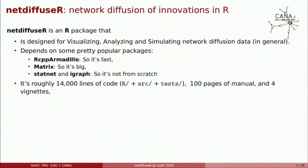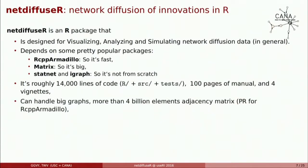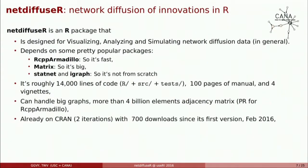It has roughly about 14,000 lines of code between R source code and tests, around 100 pages of manual, and 40 units. I can't tell you how excited I was when we reached 100 pages in the manual — that's super geeky, but for me it's proof of all the work behind this. You can handle big graphs with more than 4 billion elements in the adjacency matrix. It's already on CRAN with two iterations and has more than 700 downloads since its first release in February this year.